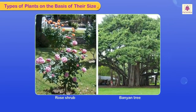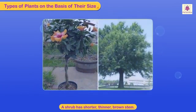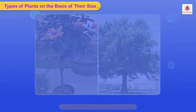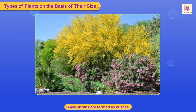Shrubs and bushes are smaller than trees. A shrub is distinctly different from a tree due to its shorter, thinner brown stem. Small shrubs are often termed as bushes.